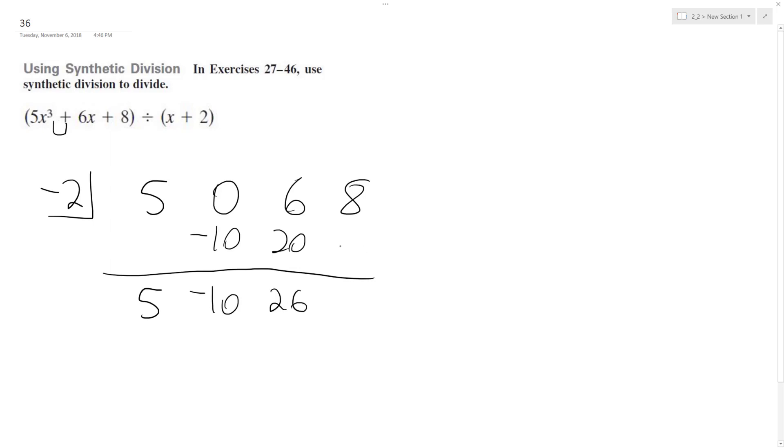And then negative 52, which gives us positive 44. So we end up with 5x squared minus 10x.